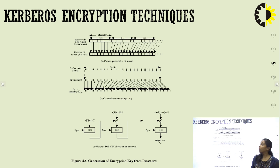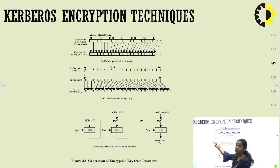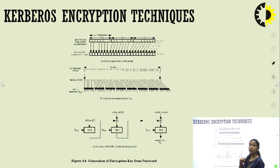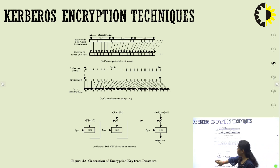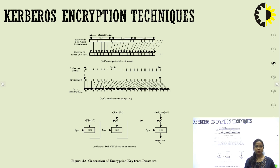The Kerberos encryption technique works as follows. First, the password is created. If the password is in the 7-bit ASCII code, it flattens the bits into N bits, then converts the password into a bit stream. Doing bit XOR operations, we get 64-bit input keywords and convert the bit stream to input keys. We then generate the DES CBC checksum of the password. The key password is provided to DES for encryption, because we do not want any interception while generating the password. The complete key is encrypted with the help of the password generated by the user.